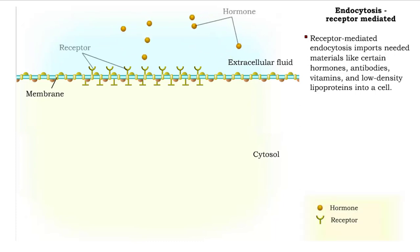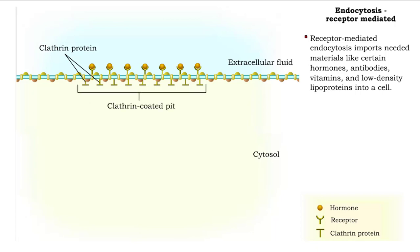Specific receptor proteins bind with these substances and then interact with peripheral proteins called clathrin, found on the cytoplasmic side of the membrane. This area of a membrane is called a clathrin-coated pit.